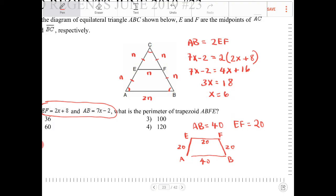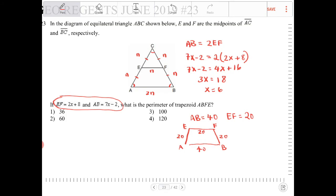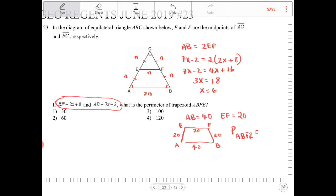Therefore, to find the perimeter of trapezoid ABFE, it will be 20 plus 20 plus 20 plus 40. So that will be 100. And that would be option 3.